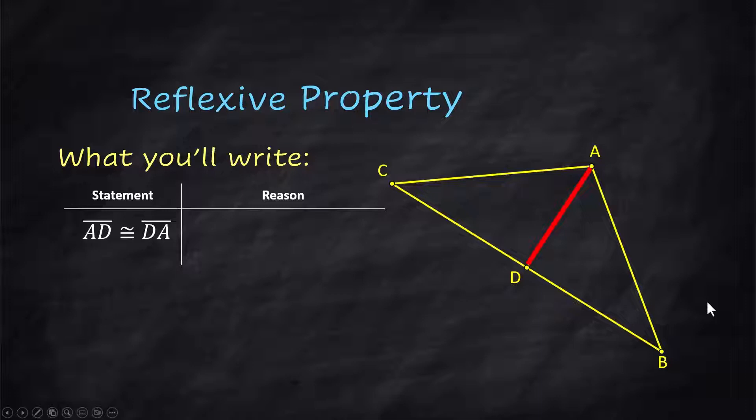The statement you would make here, if this was your picture, is that segment AD is congruent to segment DA. And the reason is reflexive property.